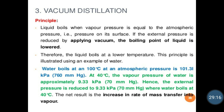The liquid boils when vapor pressure is equal to the atmospheric pressure — that is, the pressure on its surface. So if the external pressure is reduced by applying vacuum, the boiling point of the liquid is lowered. By reducing atmospheric pressure using vacuum, we are reducing the boiling point of our liquid.